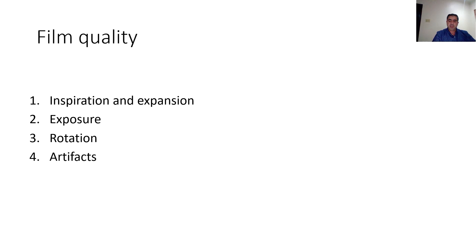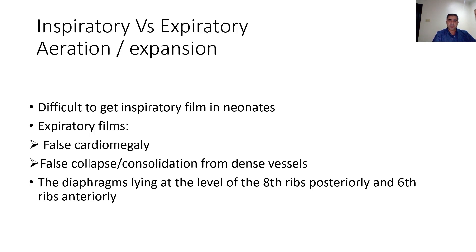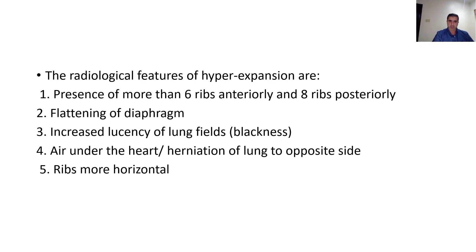Film quality is judged by four components: inspiration and expansion, exposure or penetration, rotation, and artifacts. Regarding inspiration or expansion — it's difficult to get a true inspiratory film in neonates. The problem with expiratory films is that they can give false cardiomegaly and false collapse or consolidation. A good inspiratory film lies at the level of the eighth rib posteriorly and sixth rib anteriorly. Signs of hyperexpansion include presence of more than six ribs anteriorly, or more than eight to nine ribs posteriorly.